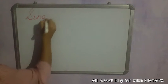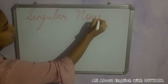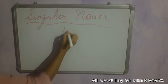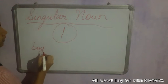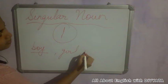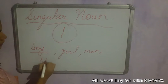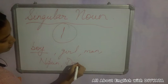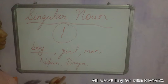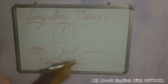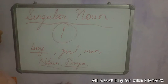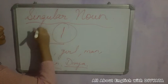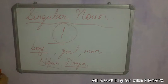Singular noun means one in number — only one. Whatever the noun is, a common noun or a proper noun, it will be only one. Examples: boy, girl, man, Nippon, Divya — all these are single in number. I'm not saying boys, girls, men, or multiple Nippons or Divyas. This is one in number — this is a singular noun.